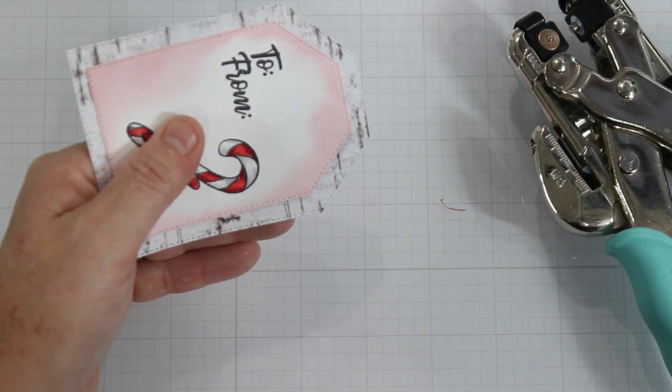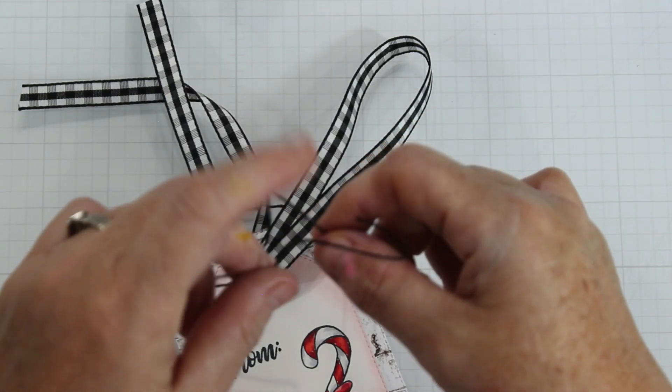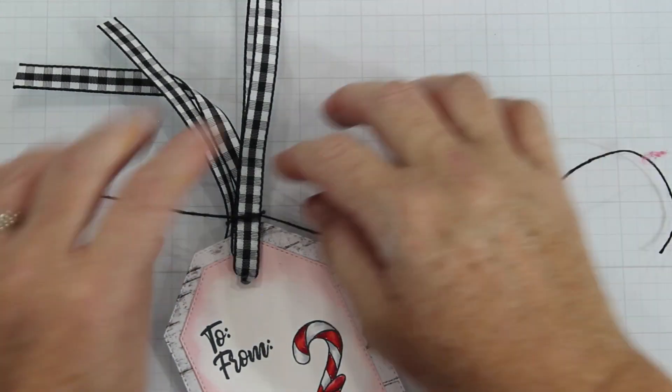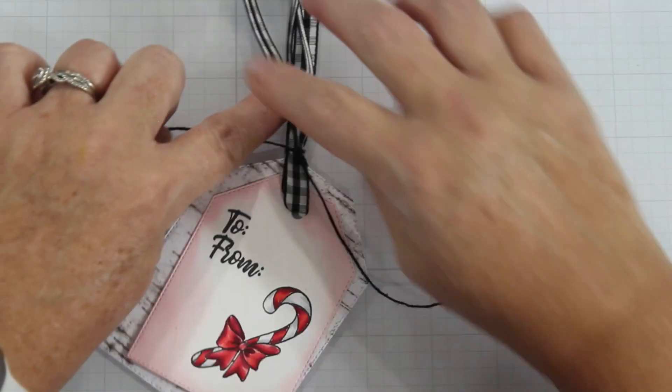Using my Crop-A-Dile I put a hole in there now I mentioned that this is a hop Wendy Cranford, Jay Thomas, and Brennan will all be part of this. This will be linked in the description box below so you'll know exactly where to go. I chose the black gingham and then I used some black twine just to tie a bow.